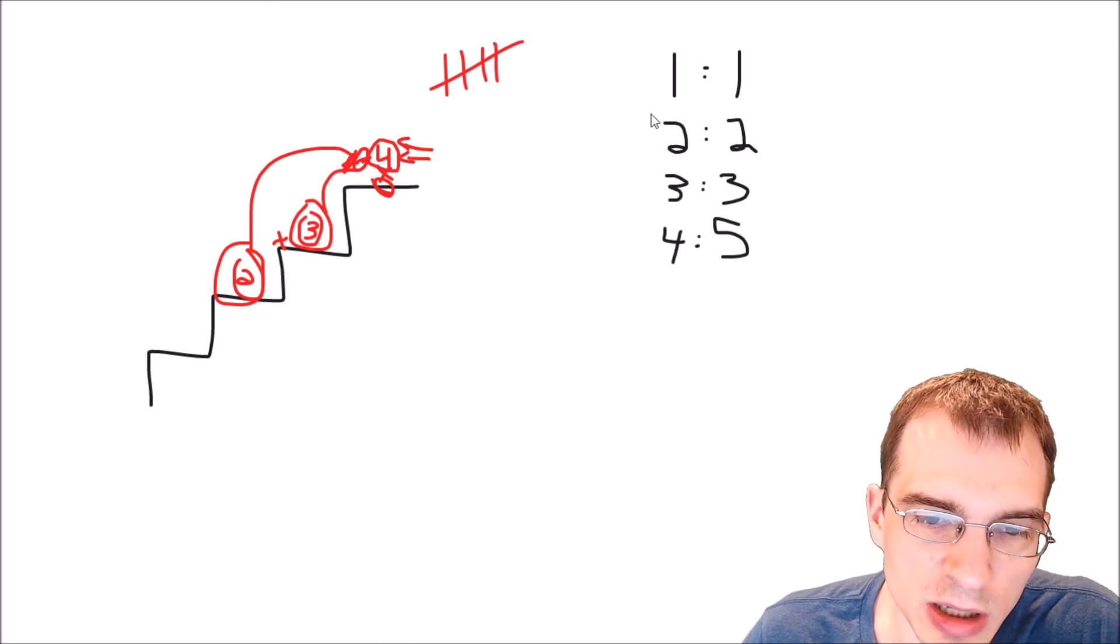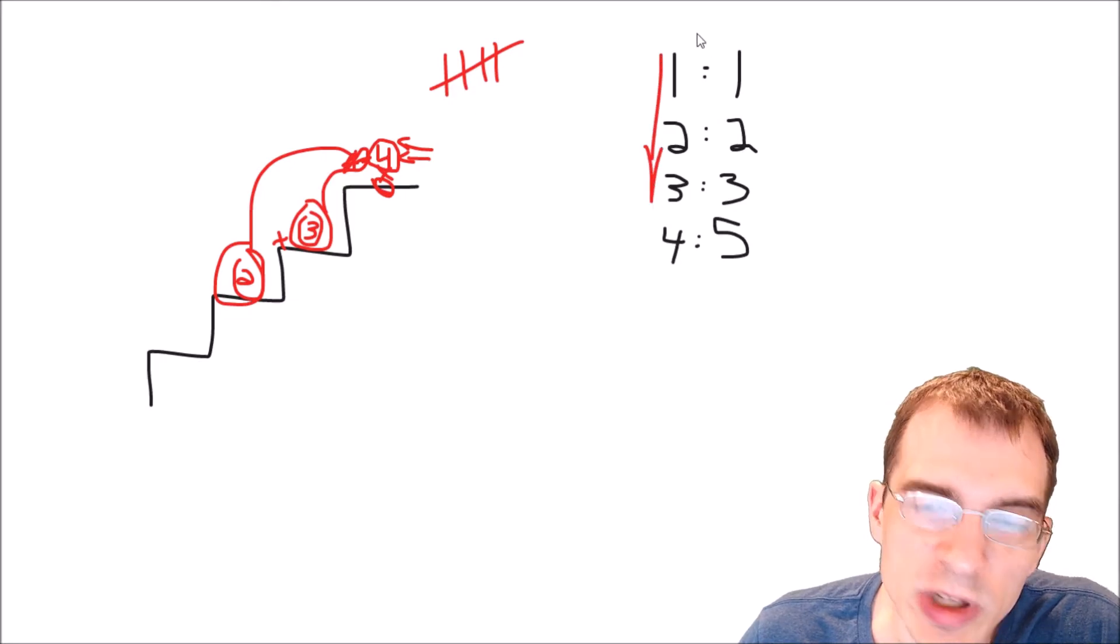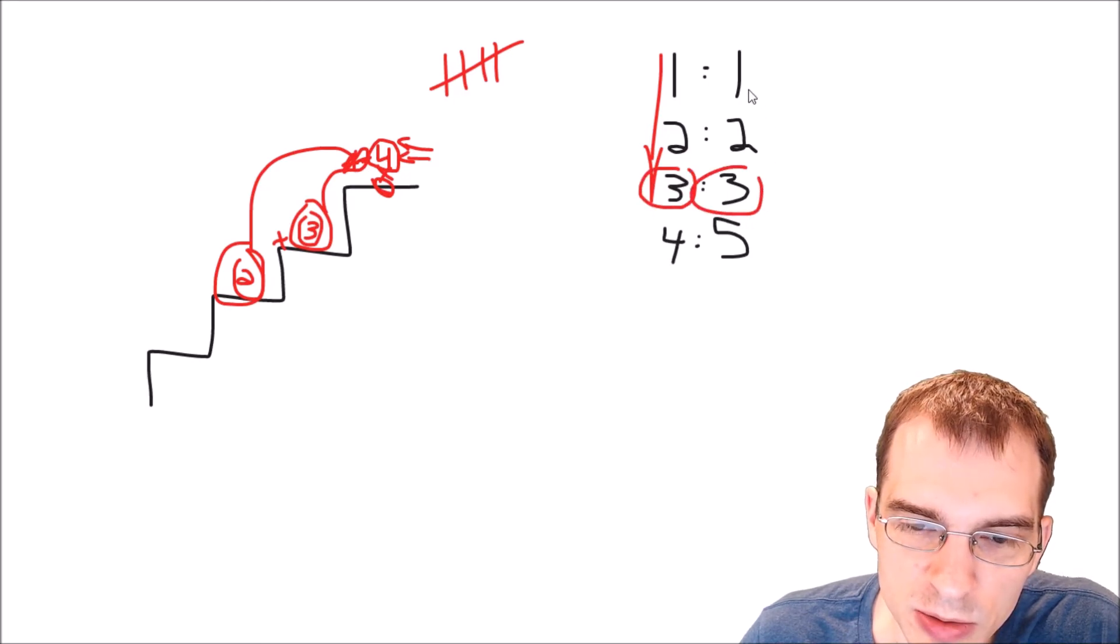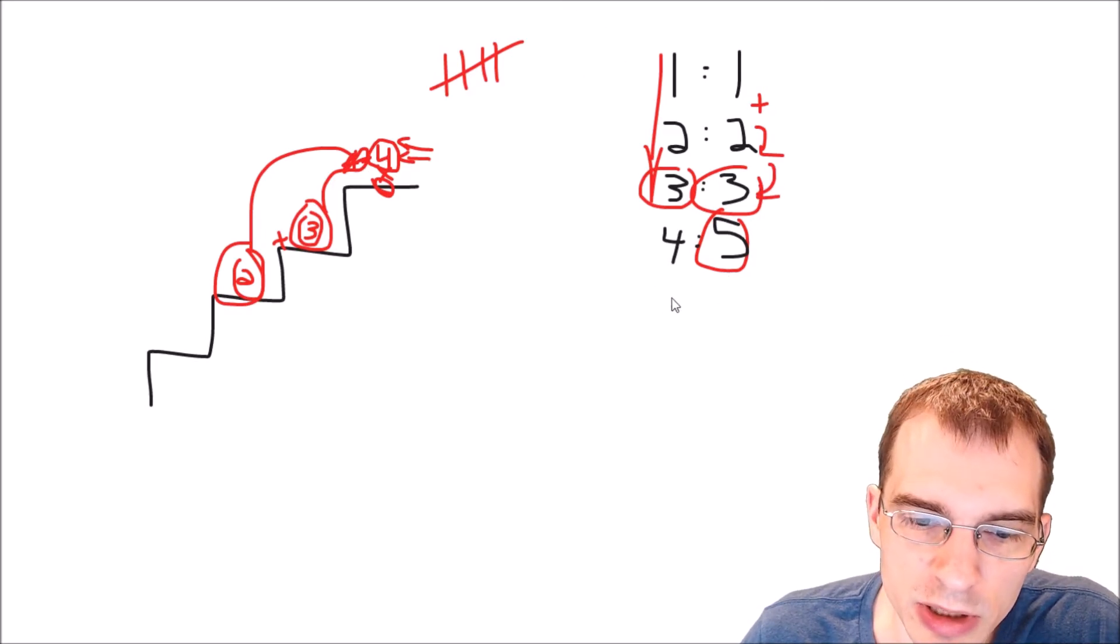And we can see in our little tree of values we've been writing out here that we can see that is the case in the results we have so far. For instance, three, the value for three was just equal to the two previous values added together. And the value for four here was just equal to the value of the two previous ones added together.